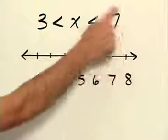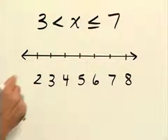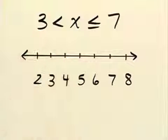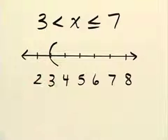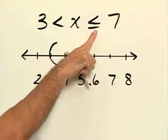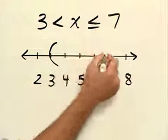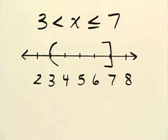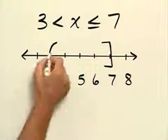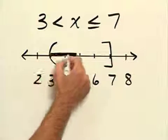Remember that this compound inequality here means that x is between 3 and 7, and this inequality says that 3 will not be included, so we use parentheses. This inequality less than or equal to means that the 7 will be included as part of the solution so we use a bracket to signify that. And then we shade everything in between because this means betweenness.